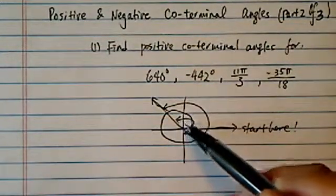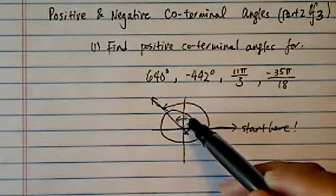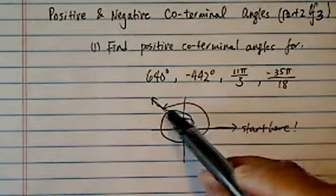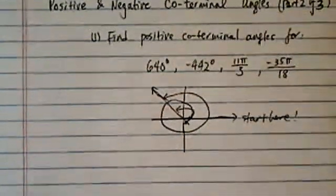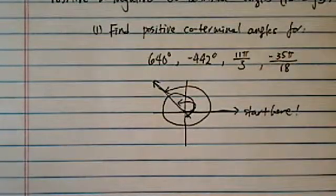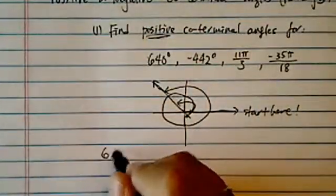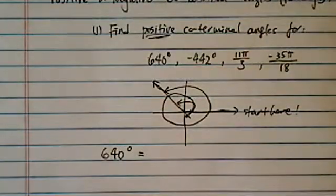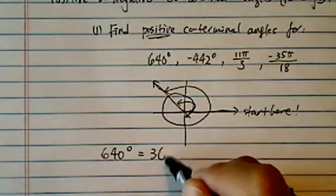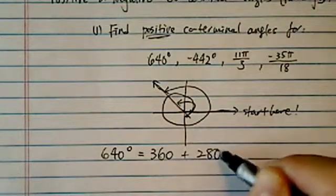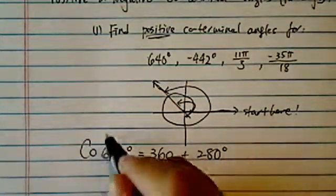Same thing with our coterminal angle. You can go over here once, or you can go around one more time and you still end up at the same place. When your teacher asks you to find coterminal angles or positive coterminal angles, it's actually pretty simple if you think about it. All they're asking is take the 360 out. Whatever is left is your coterminal angles.